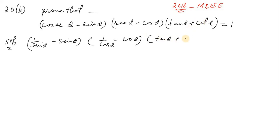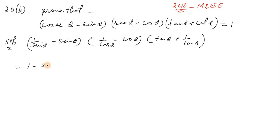Take one by tan to the one by tan — simplify the common terms. Take one by sin, one by cos to the quarter, one by tan — one minus sin squared theta divided by sin theta.